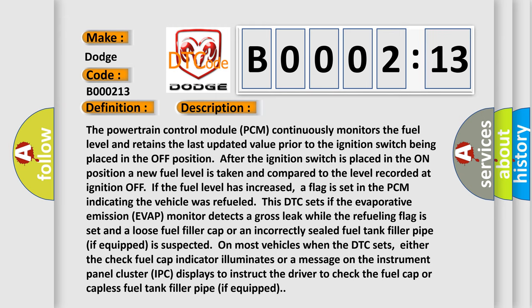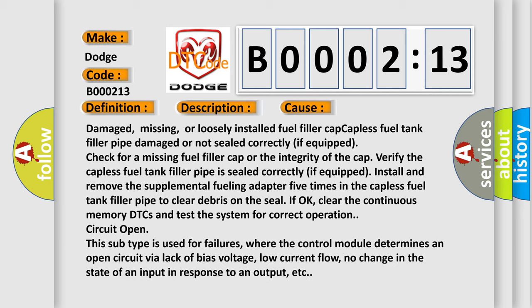This diagnostic error occurs most often in these cases: damage, missing, or loosely installed fuel filler cap; capless fuel tank filler pipe damaged or not sealed correctly if equipped. Check for a missing fuel filler cap or verify the integrity of the cap. Verify the capless fuel tank filler pipe is sealed correctly if equipped. Install and remove the supplemental fueling adapter five times in the capless fuel tank filler pipe to clear debris on the seal. If okay, clear the continuous memory DTCs and test the system for correct operation. The circuit open subtype is used for failures where the control module determines an open circuit via lack of bias voltage, low current flow, or no change in the state of an input in response to an output.